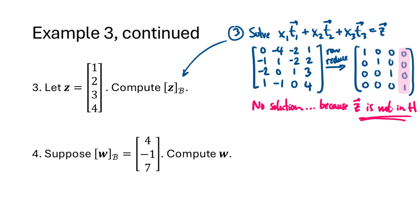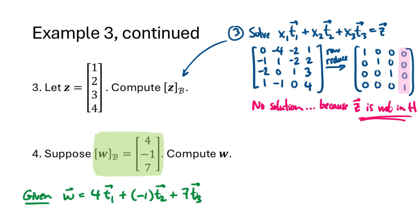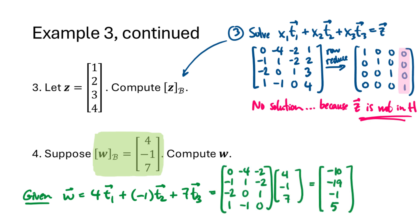Finally, for part 4, we are given the coordinate vector for w and want to find the vector itself. If the coordinate vector of w is (4, -1, 7), that gives us the weights for w as a linear combination of the t vectors: w equals 4*t1 plus negative 1*t2 plus 7*t3. We can compute this efficiently by multiplying the matrix whose columns are the t vectors times the vector (4, -1, 7). This tells us that w is the vector (-10, -19, -1, 5).